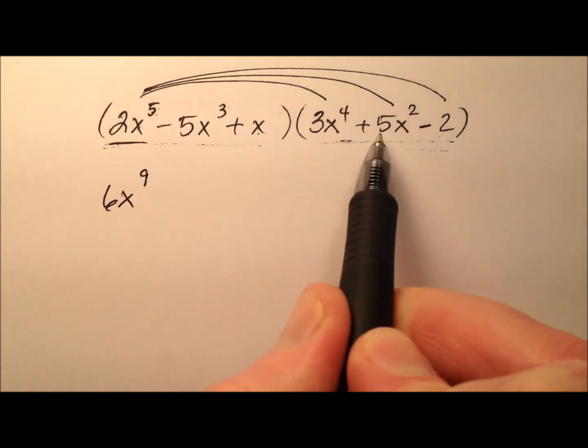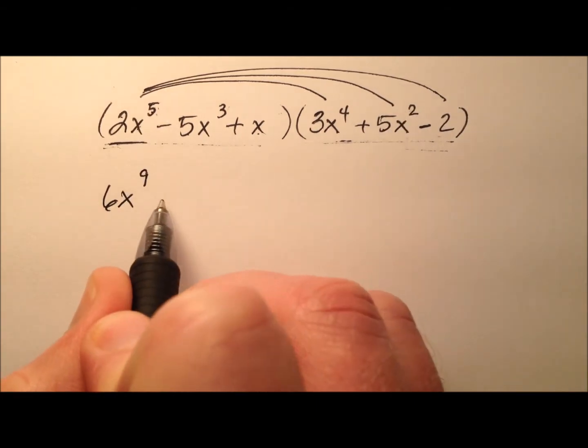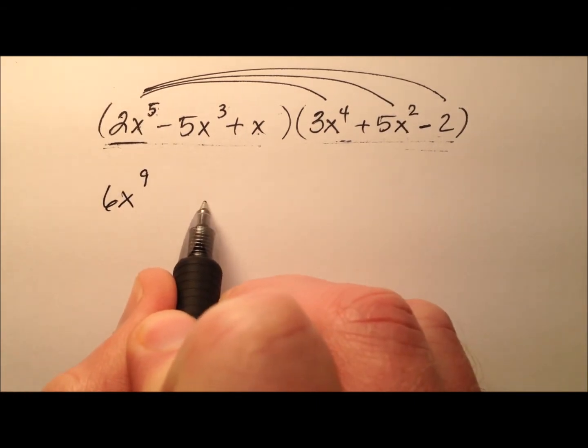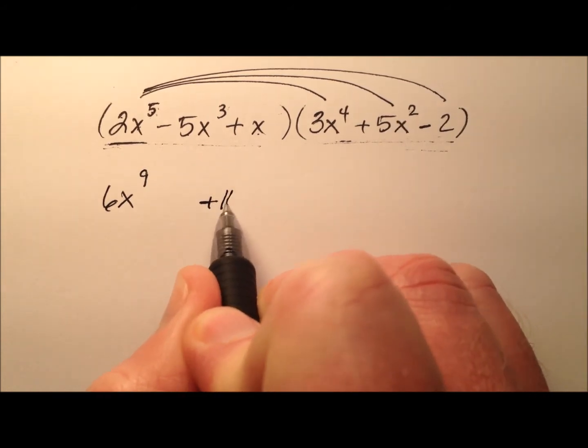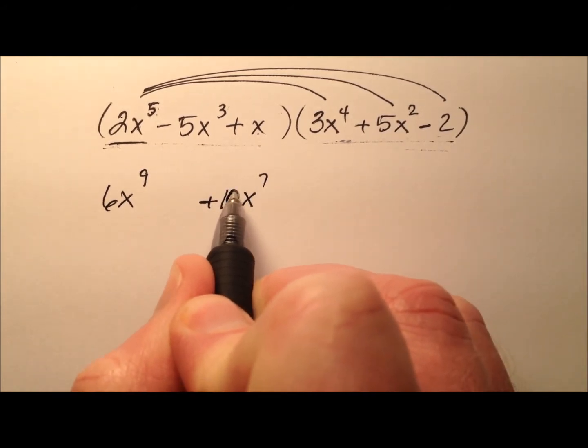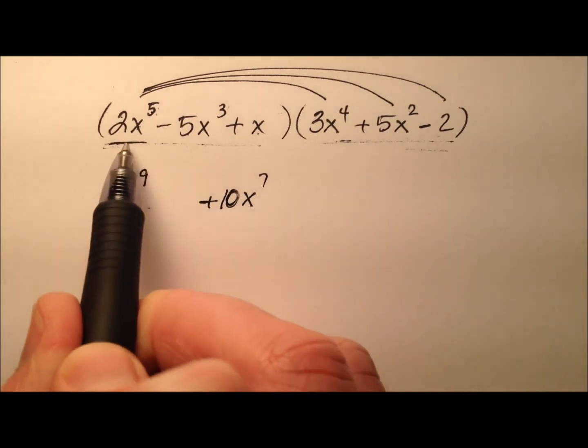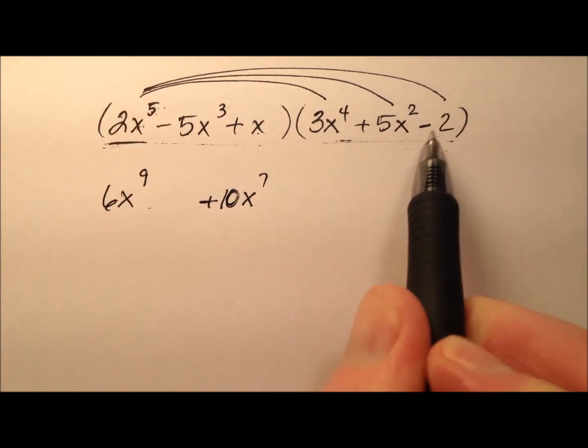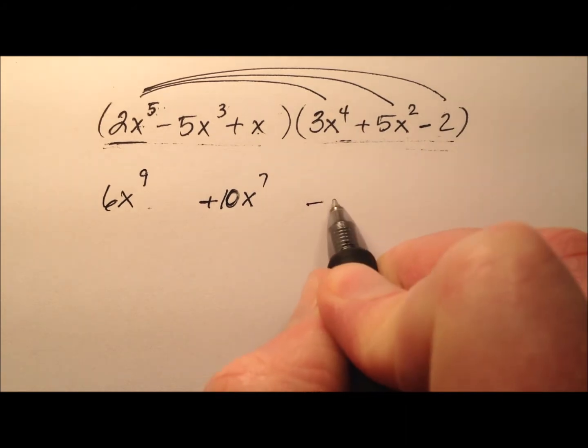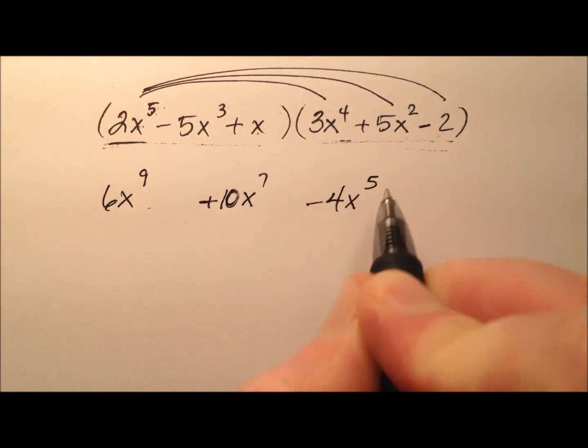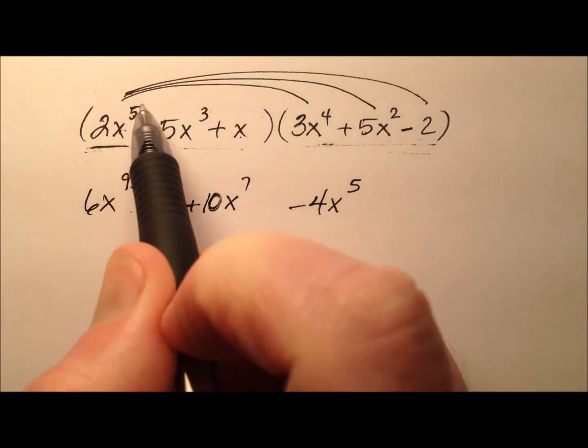So 2x to the fifth and 5x squared, that'll be 10 and 10x to the seventh. I left a little space here because we're not sure if there's an x to the eighth term that's going to sneak its way in here. So let's do the last one, 2x to the fifth times negative 2, and that'll be a negative 4x to the fifth. Okay, so that's done with this one.